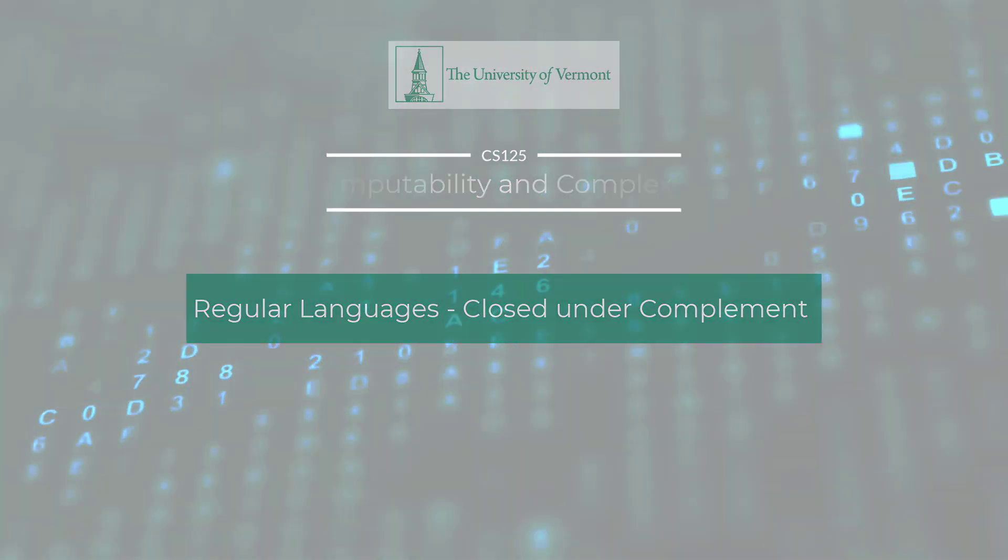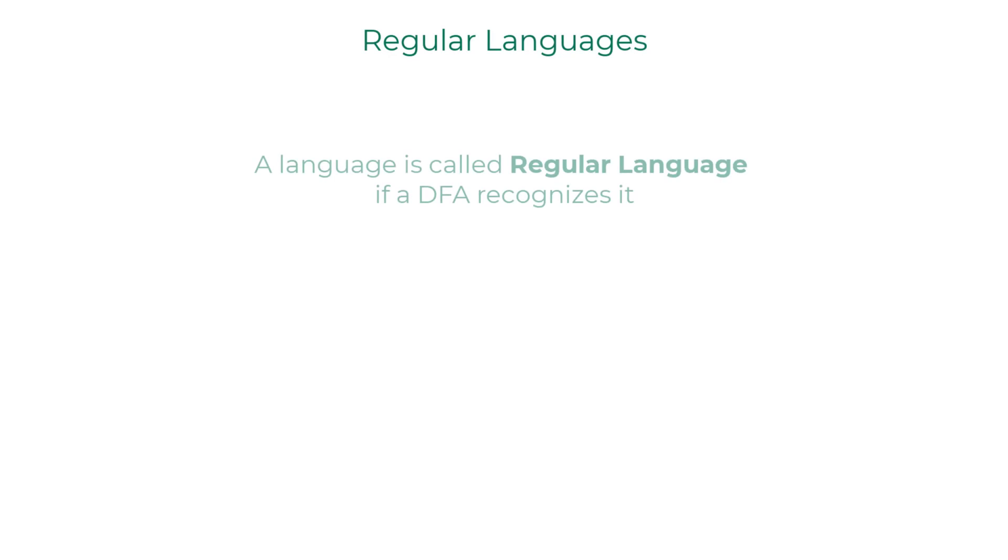A language is called a regular language if a DFA recognizes it. The set of languages recognized by all DFAs is the set of regular languages. Let's see if the language L of a machine M is a regular language.